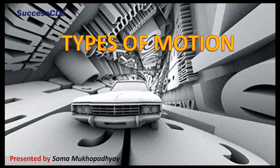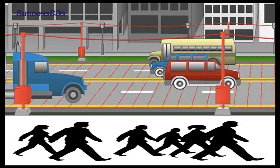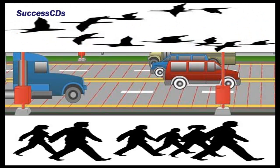Motion can be observed everywhere. Just take a look around yourself — you can see people walking, vehicles moving on the roads, birds flying in the sky, etc.